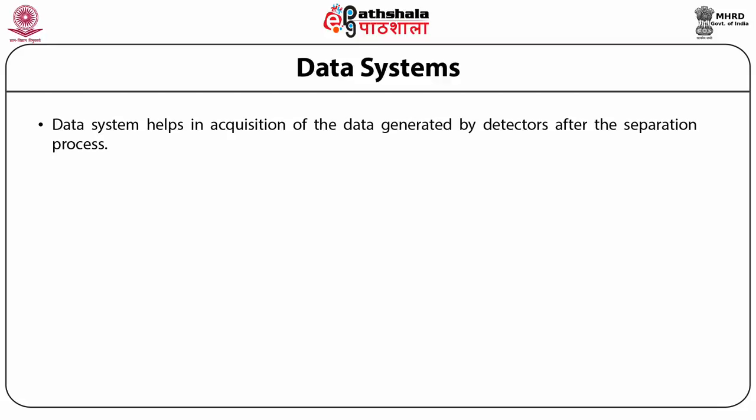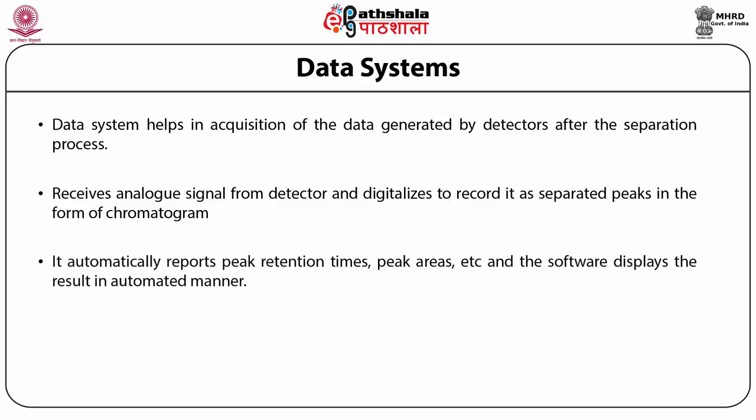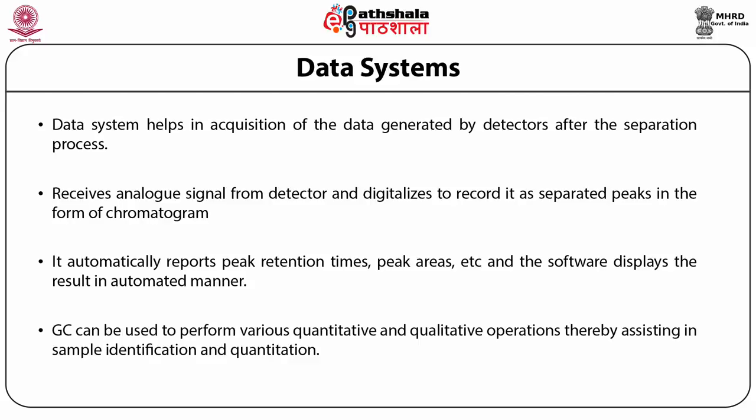The data system helps in acquisition of data generated by detectors after the separation process. It receives analog signals from the detector and digitalizes them to record separated peaks as a chromatogram. It automatically reports peak retention time, peak areas, etc., and the software displays results in an automated manner. Thus, gas chromatography can be used to perform various quantitative and qualitative operations, assisting in sample identification and quantitation.